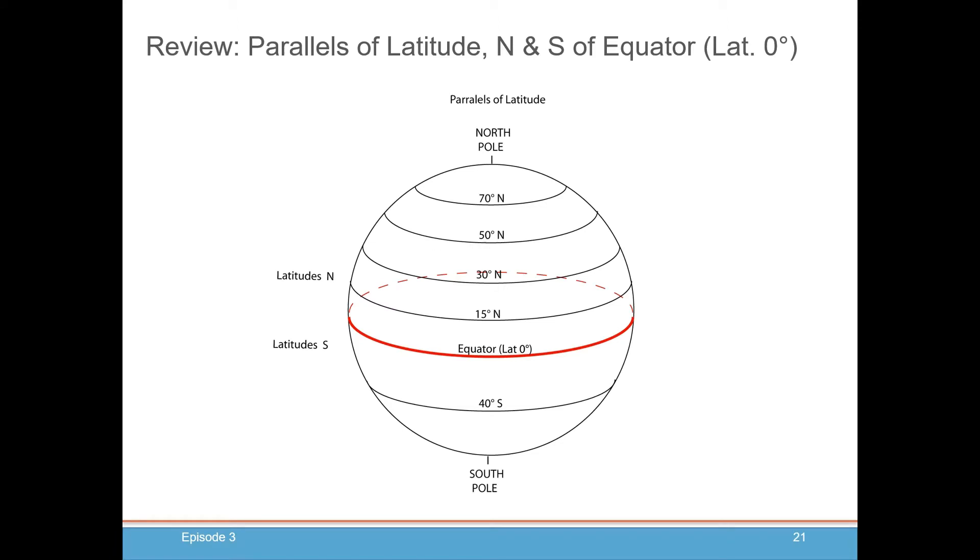The first thing you need to understand is latitudes. Latitudes are parallel lines parallel to the equator. The equator is labeled as latitude zero, and each latitude north and south of it is designated as you see on this illustration.